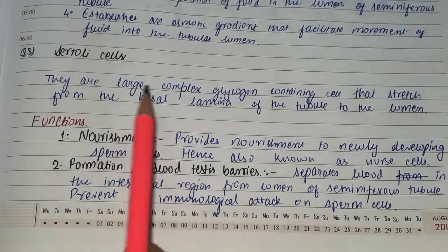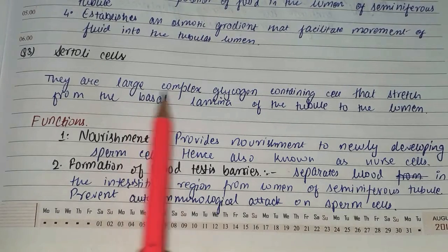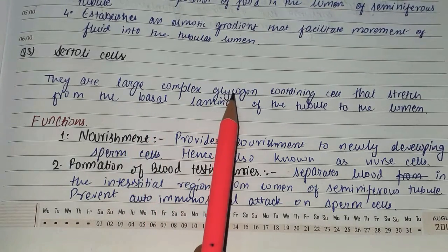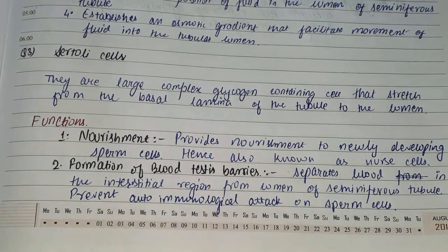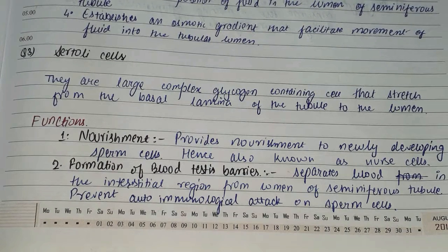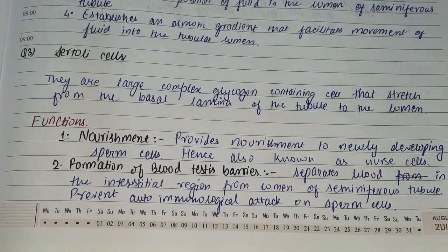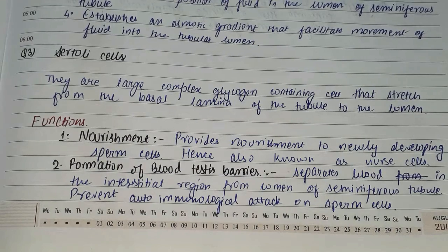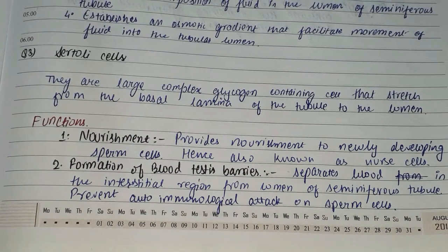Sertoli cells are large complex glycogen-containing cells that stretch from the basal lamina to the lumen of the seminiferous tubule.